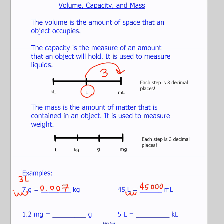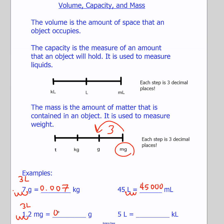Next, we're moving from milligrams to grams. We find milligrams, find grams, and move three to the left. Finding our decimal and moving one, two, three to the left gives us 0.0012 grams. And lastly, liters to kiloliters: find liters, find kiloliters, move three to the left, and moving one, two, three gives us 0.005 kiloliters.